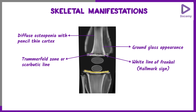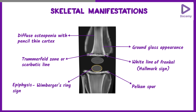Along the periphery of the metaphyses, the periosteum will be elevated, forming a spur-like projection at a right angle to the shaft of the bone, known as the pelican spur. The epiphyses will be small, and the periphery of the epiphyses will show a white line known as the Wimberger sign or Wimberger ring sign. There can also be subperiosteal hemorrhage which elevates the periosteum, and when calcified, can be seen as a peripheral area of calcification.